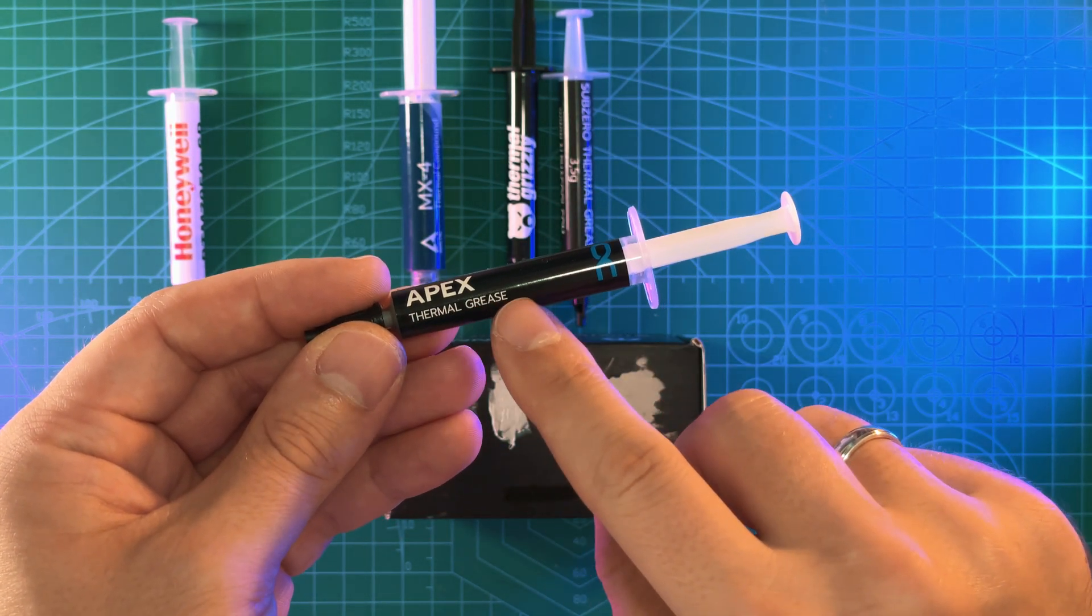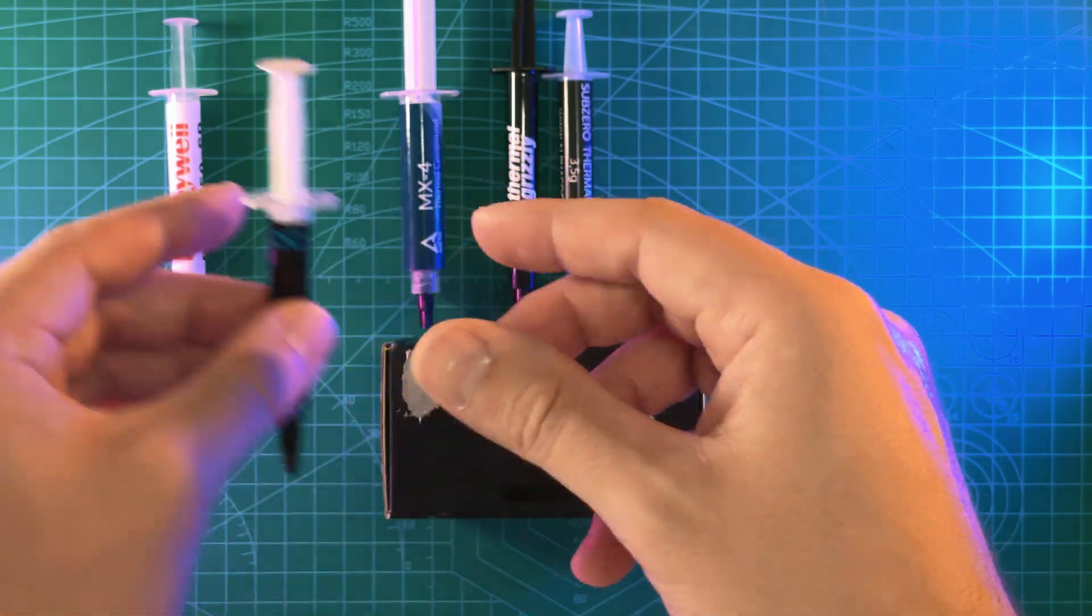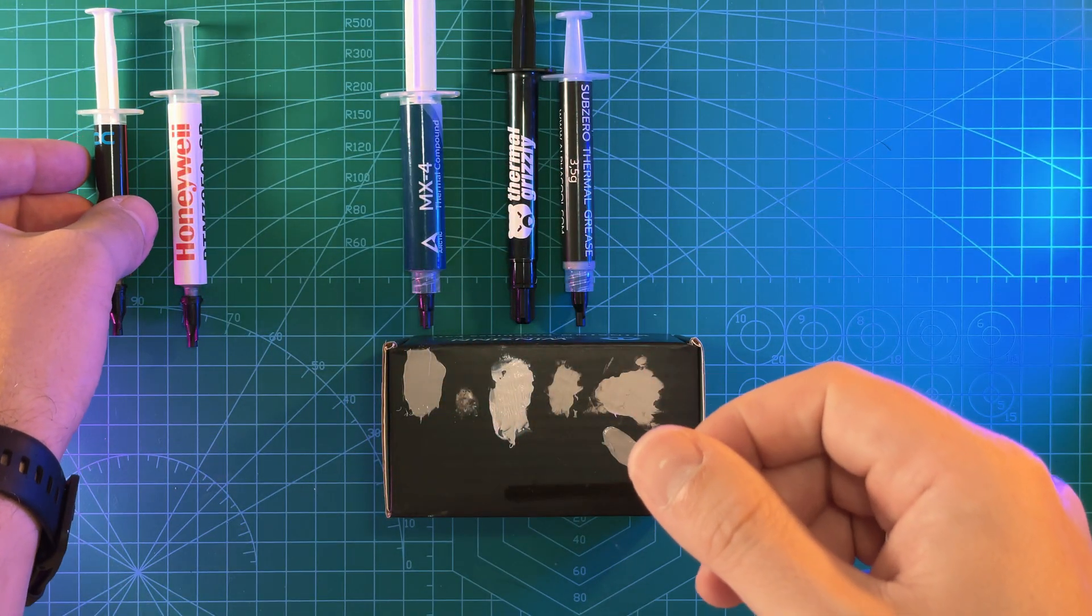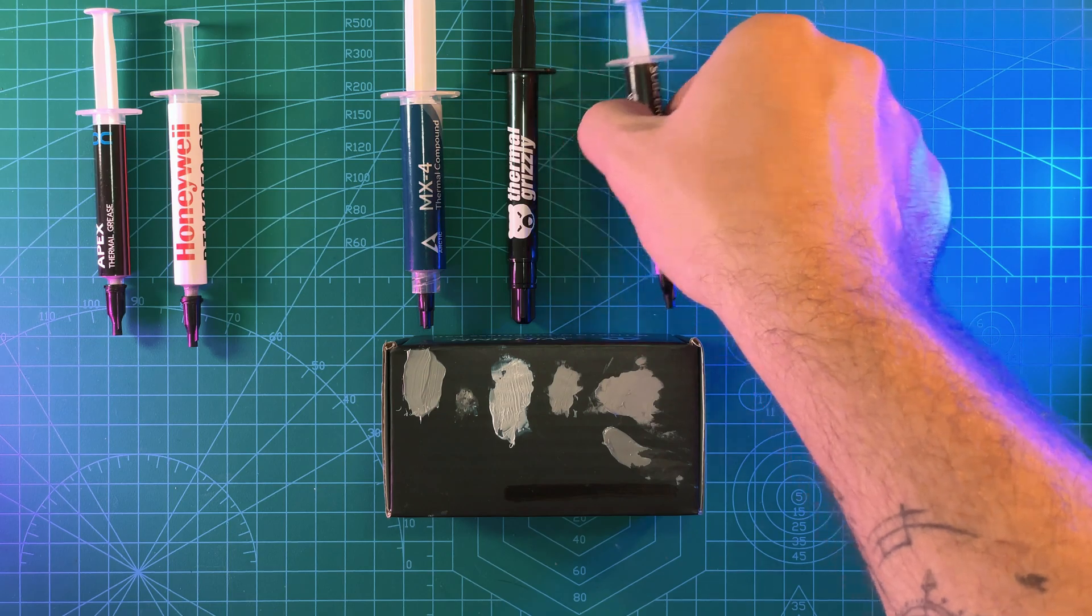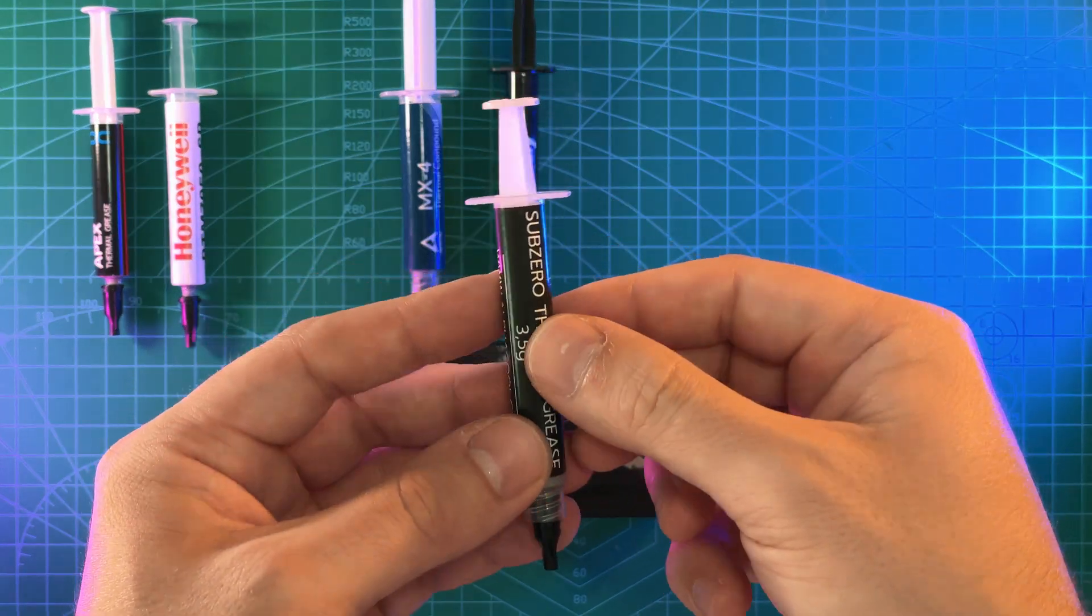Alphacool Subzero is good when it comes to the standard soft paste since its thermal conductivity is better than others and it's slightly thicker which makes it better for different surfaces. Then we have Thermal Grizzly.